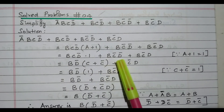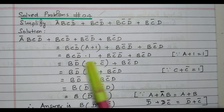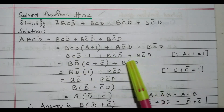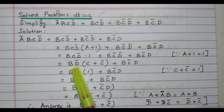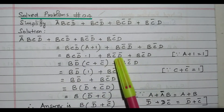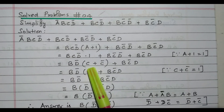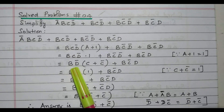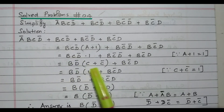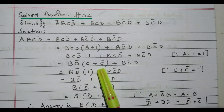So due to that, bcd̄ · 1 + bc̄d̄ + bc̄d. Now all three remaining terms have three variables. We'll try to take at least two variables outside for further simplification. We can see that bd̄ appears commonly here: bd̄ is in bcd̄ and also in bc̄d̄. So we'll take bd̄ outside — remaining term from bcd̄ is c, and from bc̄d̄ is c̄.